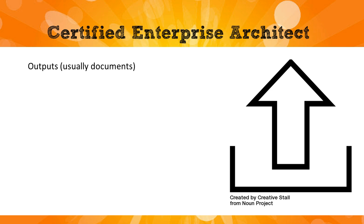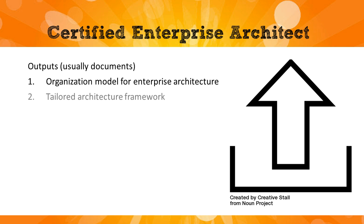The outputs are worth reviewing, though there won't be many exam questions on them. Output one is the organization model for enterprise architecture, describing how your company does architecture. Output two is the tailored framework — the result of tailoring TOGAF to your organization. Output three is the initial architecture repository: pulling together existing documents, diagrams, and lists. If you've done some form of architecture before, even if not formally TOGAF, gather and organize those documents according to the content meta model or the enterprise continuum.